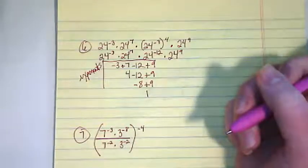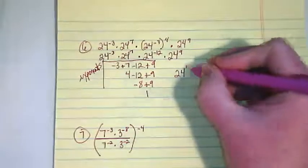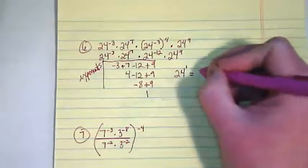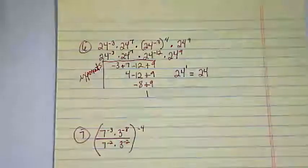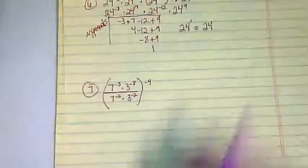So the exponent we're left with at the end of all this is 1. That means that the answer is 24 to the first power, which can be written as just 24. The other problem I was asked to work on was number 7.